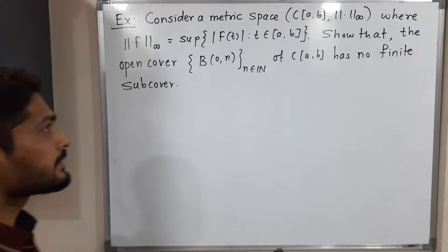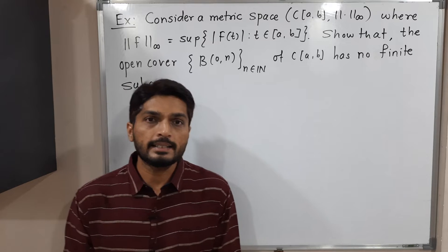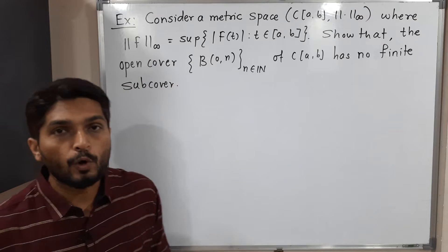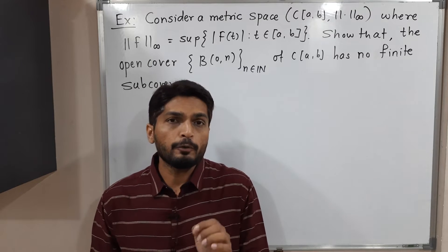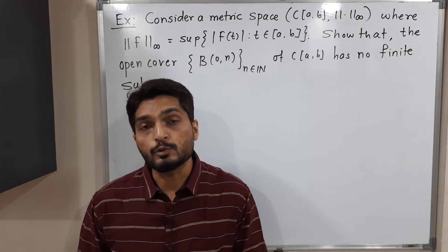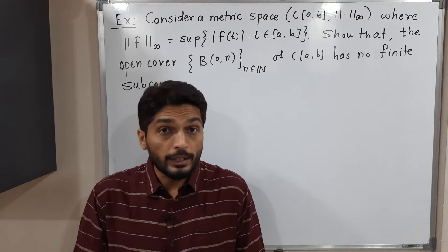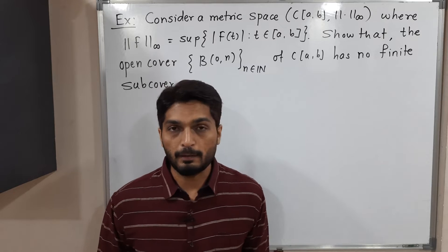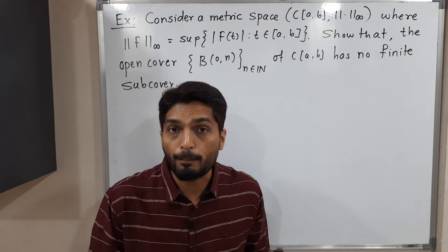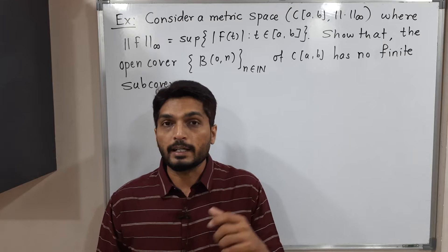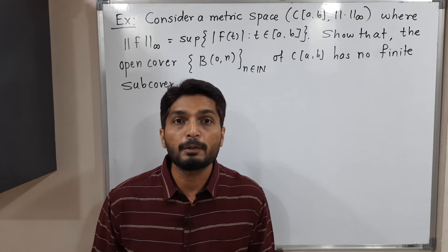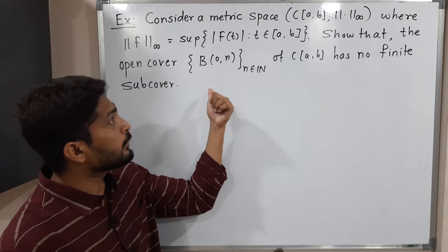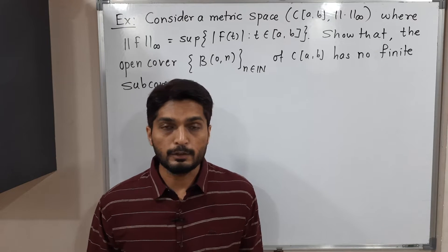Hi everyone, let us discuss this example. We have a metric space C[A,B] with the norm-infinity. We have to prove that this metric space is not compact by showing that the given open cover has no finite sub-cover. When we say a metric space is compact, every open cover has a finite sub-cover, but here we prove it is not compact.